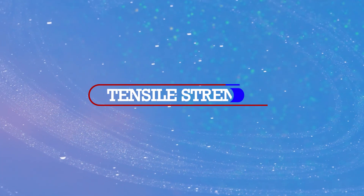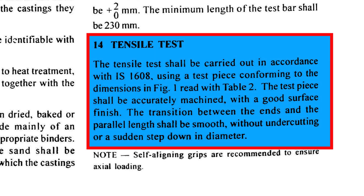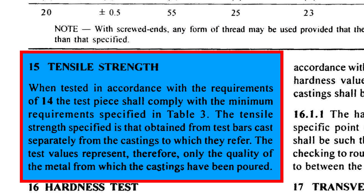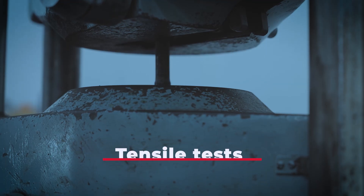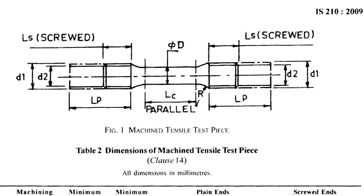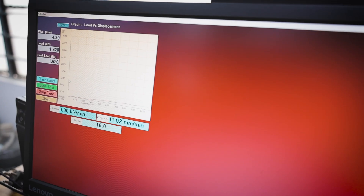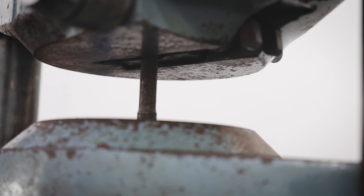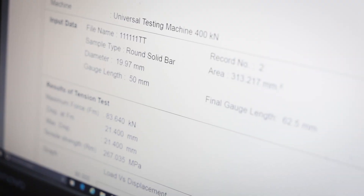Tensile tests are conducted to assess material strength, elasticity, ductility, yield strength and suitability for applications. They help determine a material's behavior under stress, ensuring it meets quality standards and performance requirements, and this information is essential for material selection, design and regulatory compliance. To conduct the tensile test: prepare a sample from the cast iron bar ensuring it meets dimensions specified in the standard; secure the sample in the UTM using appropriate grips, making sure it's tightly fastened; enter test parameters into the software including gauge length and cross-sectional area; then initiate the test. As the load increases, the sample will eventually break under stress and the software will automatically display the tensile strength of the sample.